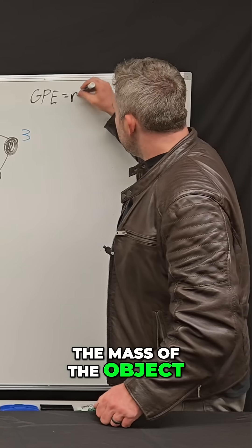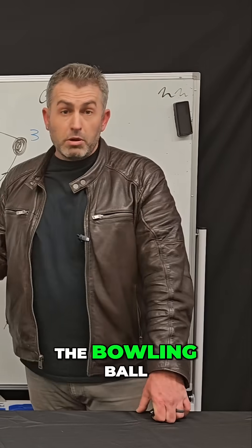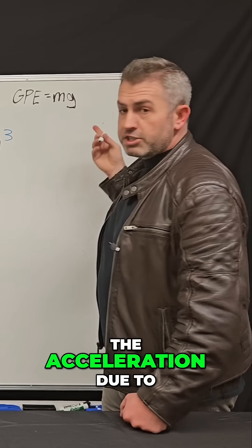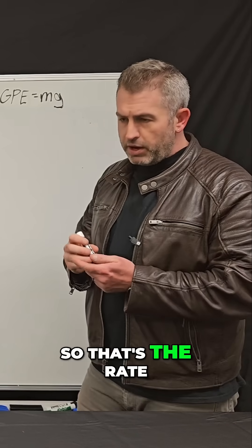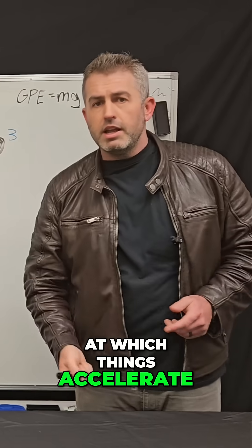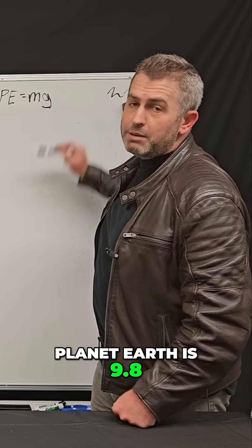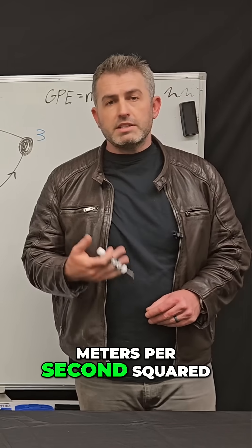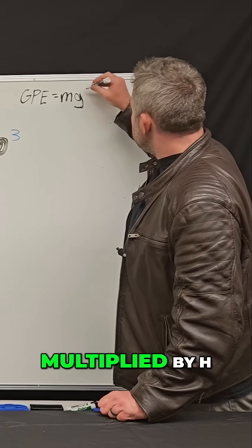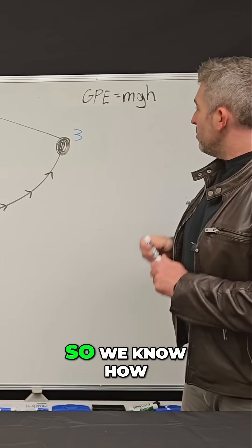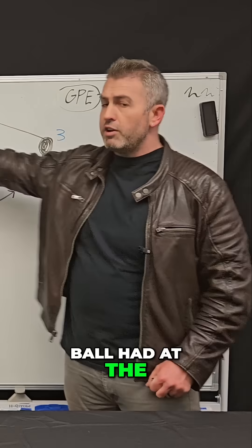So it would be the mass of the object. In this case, that's the mass of the bowling ball. And then it's multiplied by G, which is known as the acceleration due to Earth's gravity. So that's the rate at which things accelerate when they fall. And so G on planet Earth is 9.8 meters per second squared. And all of that's multiplied by H, which is the height that you raise your object.